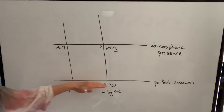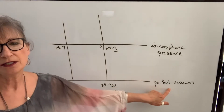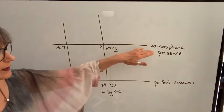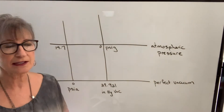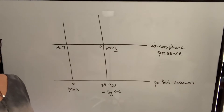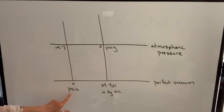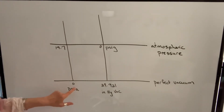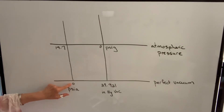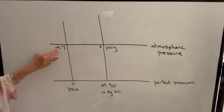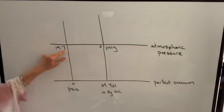What I've drawn here is a line to represent the total absence of pressure, or a perfect vacuum, and then this line represents atmospheric pressure at sea level. For PSIA — pounds per square inch absolute — the scale starts with a total absence of pressure. In a perfect vacuum, it starts at zero, and at atmospheric pressure we have an absolute pressure of 14.7 PSI.